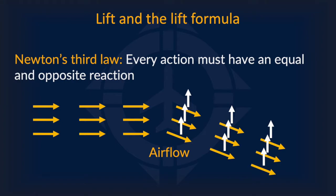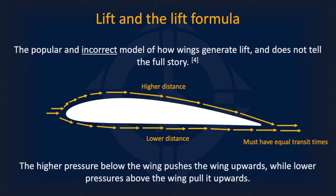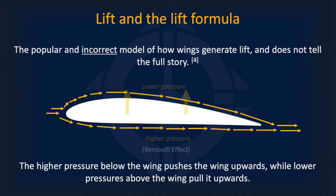Before discussing how airplanes generate lift, it is important to examine an incorrect model of lift. This popularized yet incorrect model relies on the idea that the unique shape of an airplane wing causes the pressure below the wing to exceed that above it. Because of the equal transit time idea, the air traveling the longer distance above the wing must move faster than the air below, as they must arrive at the end of the wing simultaneously. According to the Bernoulli principle, faster fluids cause lower pressures, so higher pressure below pushes the wing up, while lower pressure above pulls it up. The theory isn't completely incorrect, as differing air pressures are indeed involved, but it doesn't tell the full story.